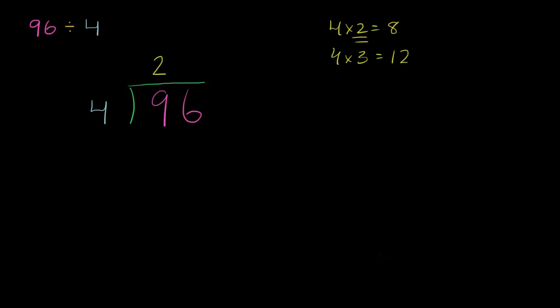And then we say, what's 2 times 4? Well, 2 times 4 is 8. And now we subtract. We subtract the 8 from the 9, and we get 1. And now we bring down the next digit, which is the 6.